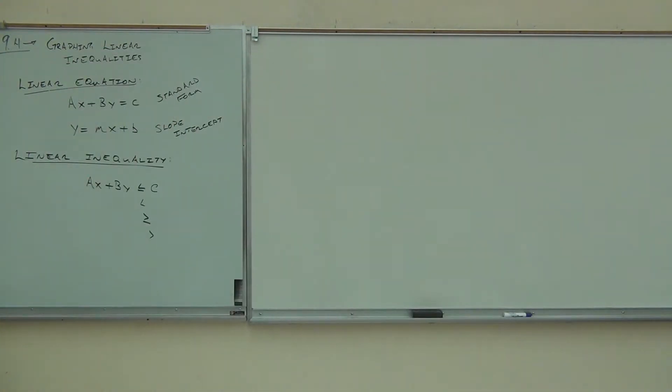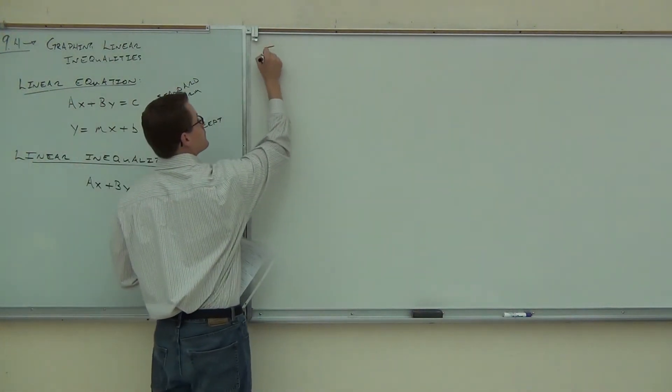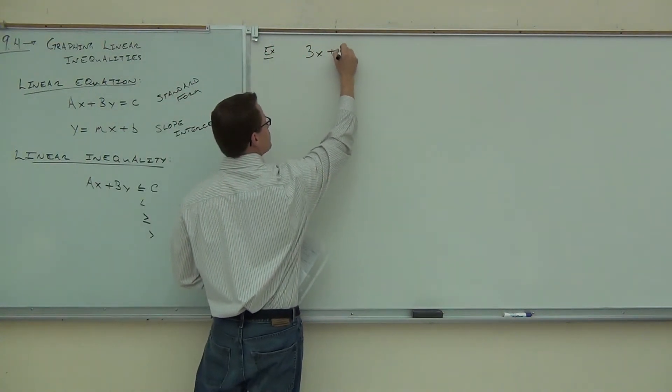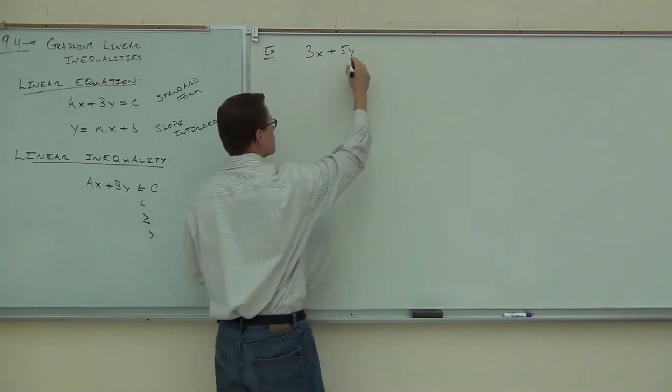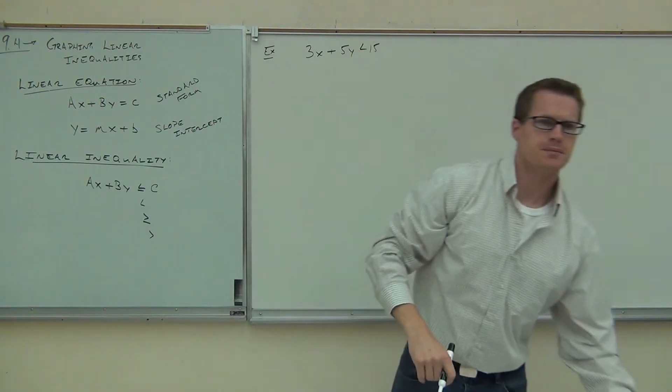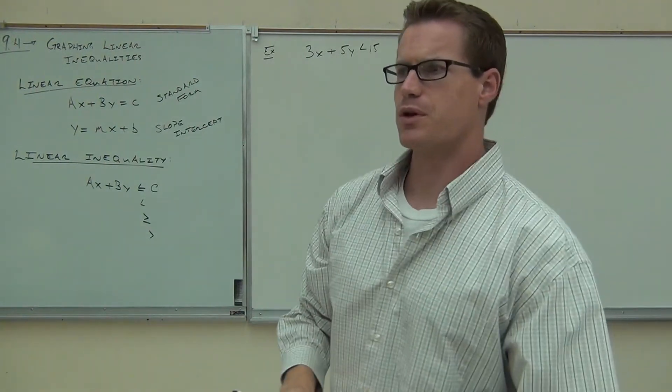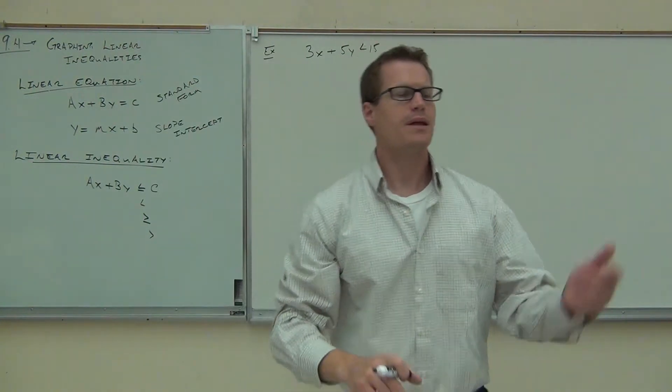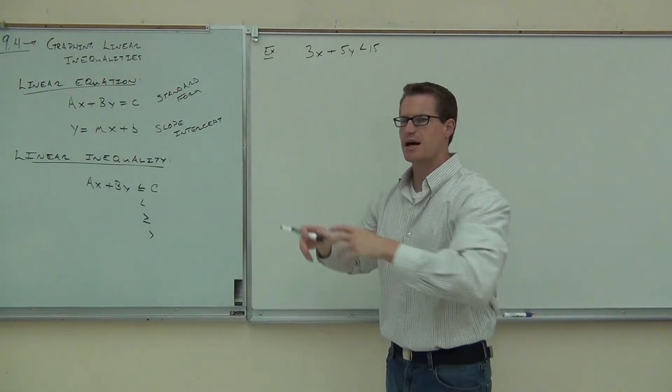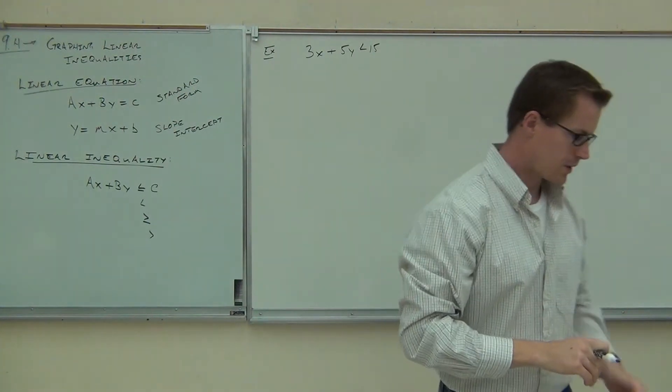So let me give you your very first example of a linear inequality. 3x + 5y < 15. Firstly, what form would that be in? Is that standard form or slope-intercept form? What do you think? That's definitely standard form. It's got both variables on the left-hand side, the constant on the right-hand side. So we are dealing with our standard form here in this case.